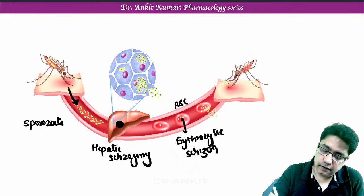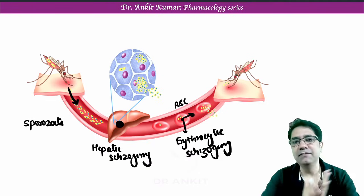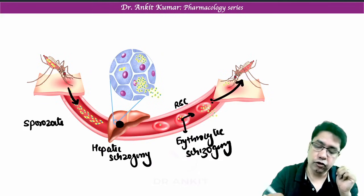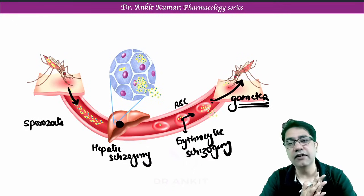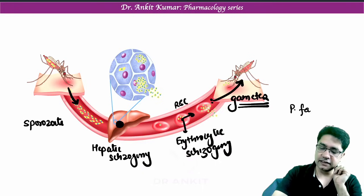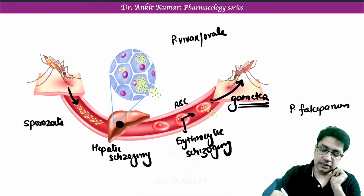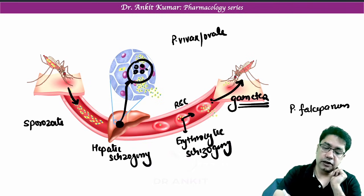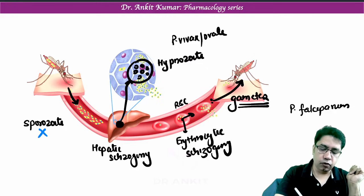When the malaria parasite or plasmodia ruptures RBCs, clinical symptoms appear. Some of the parasites can go back into the mosquito, but only the gametes present in the blood can infect the mosquito. This is the cycle of P. falciparum. In cases of P. vivax and ovale, some of the hepatic schizogony parasites become dormant — they go into sleep — and this dormant stage is known as hypnozoite.